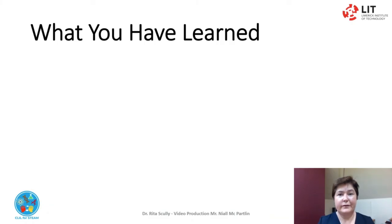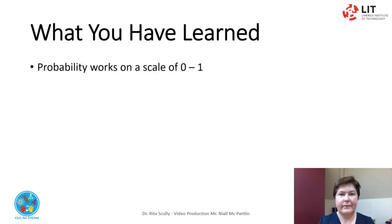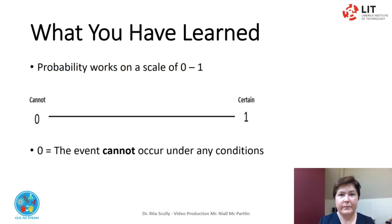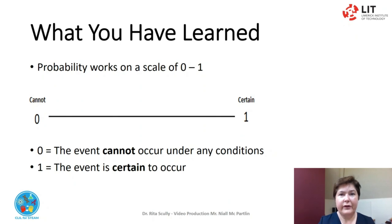What you have learnt. Probability is the study of how likely something is to happen. Probability works on a scale of 0 to 1: 0 means the event cannot occur under any circumstances, and 1 means the event is certain to occur. Probability can be shown on the probability line of 0 to 1.